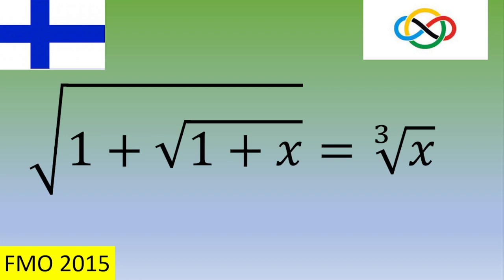Hello and welcome. In this video we solve an exercise given during the Mathematics Olympiad in Finland in 2015. We want to find the real values verifying: square root of (1 plus square root of (1 plus x)) equals the cubic root of x. If you want to give it a try, please pause the video. Otherwise, let's see the solution.